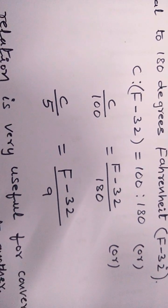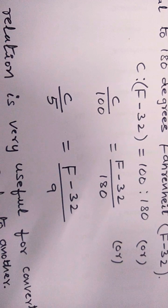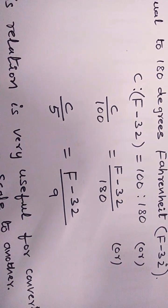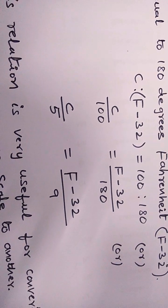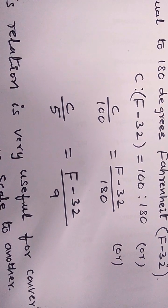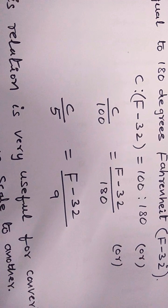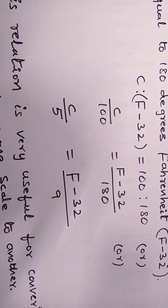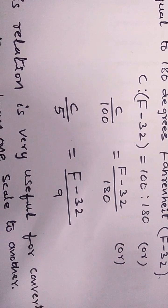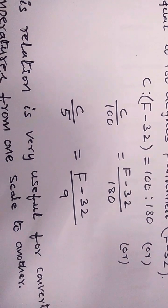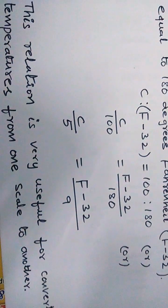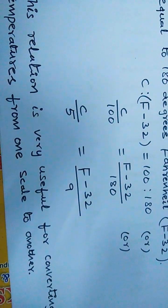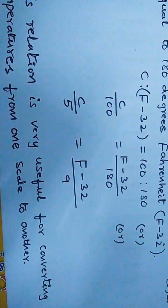So C divided by 100 equals (F minus 32) divided by 180, or C by 5 equals (F minus 32) divided by 9. This relation is very useful for converting between the two scales.